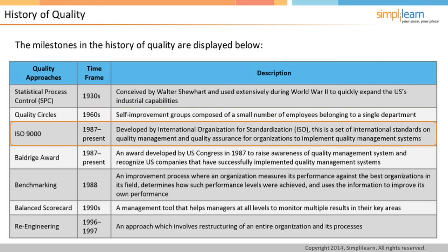In 1987, ISO 9000 was introduced. ISO stands for International Organization for Standardization. ISO 9000 is a set of international standards on Quality Management and Quality Assurance to help organizations implement quality management systems, and it is still in effect. The Baldrige Award, now known as the Malcolm Baldrige National Quality Award, was developed by the U.S. Congress in 1987 to raise awareness of quality management systems and recognize U.S. companies that have successfully implemented them.